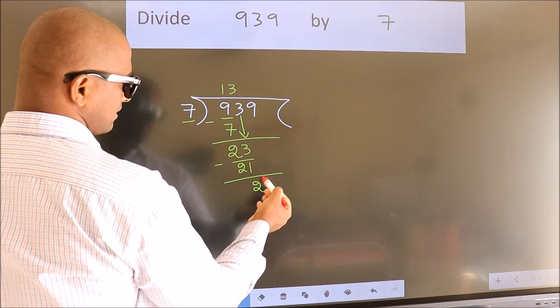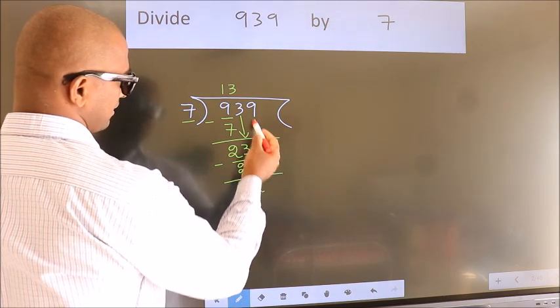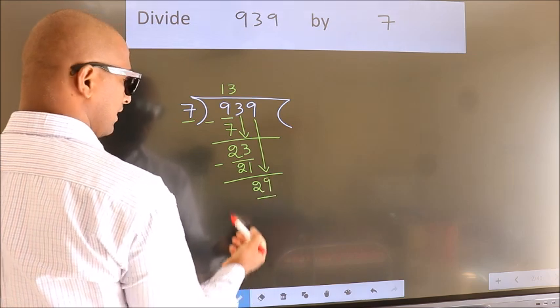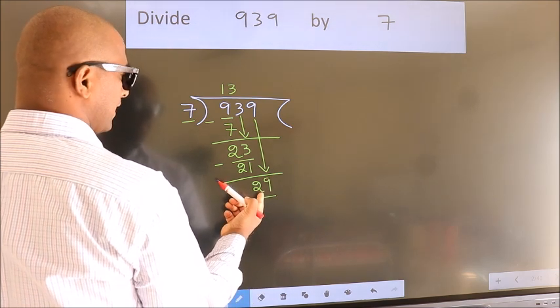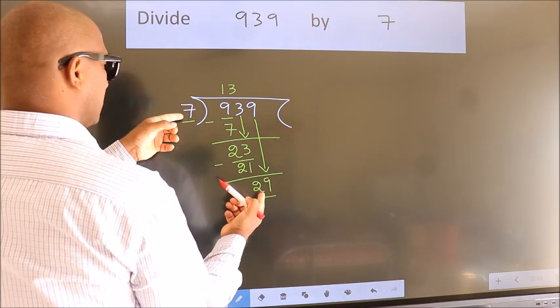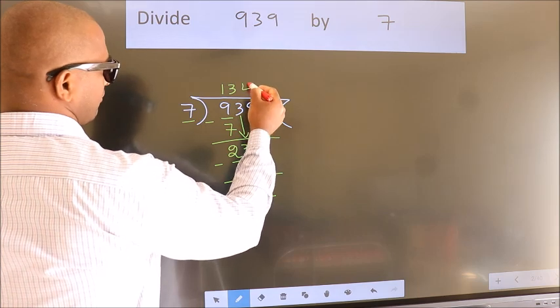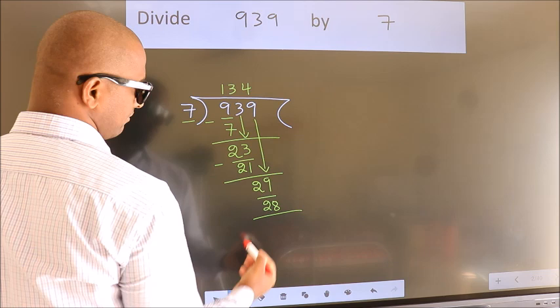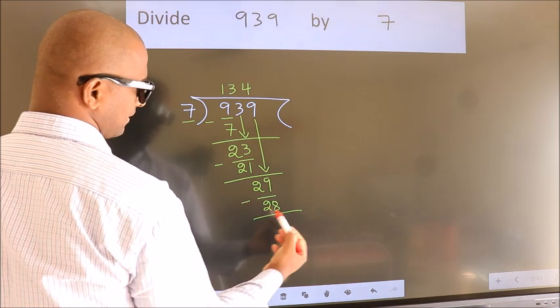After this, bring down the beside number. So, 9 down. So, 29. A number close to 29 in the 7 table is 4 times 7, which is 28. Now we subtract. We get 1.